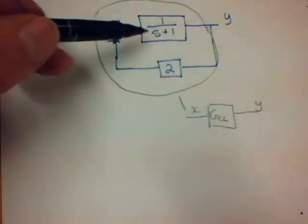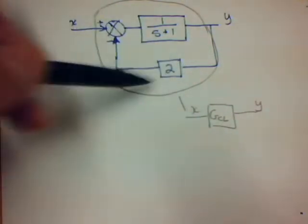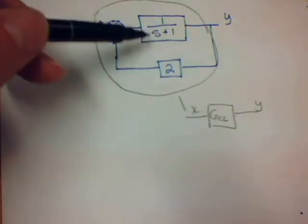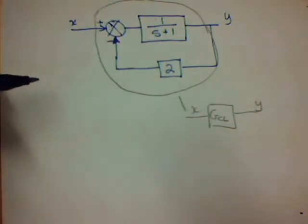I've put some values: 1 over S plus 1, and then 2 for a value. Don't worry too much about the S being there, but we will use that later on. It's a Laplace transform, which shows that there's a time delay in the system.